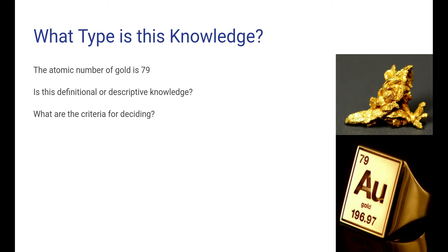And again, I will not give away the answer here, but just show this question. You have the statement: the atomic number of gold is 79. Is this definitional or descriptive knowledge? It's not obvious. And what are the criteria for deciding between these? And once again, please think about this.